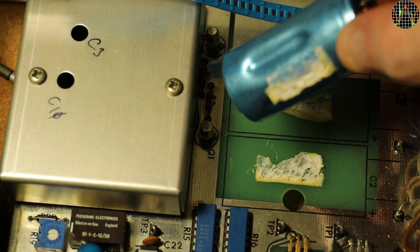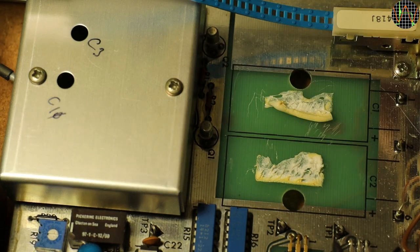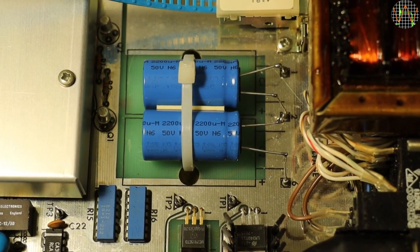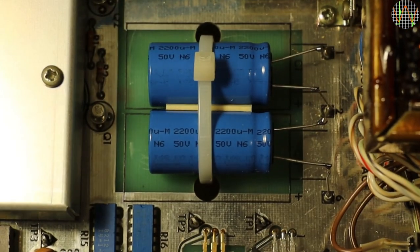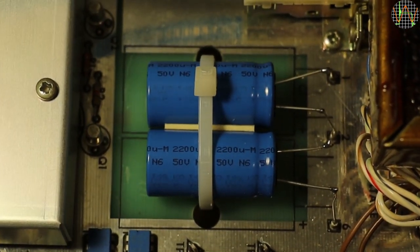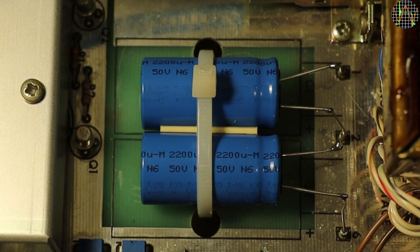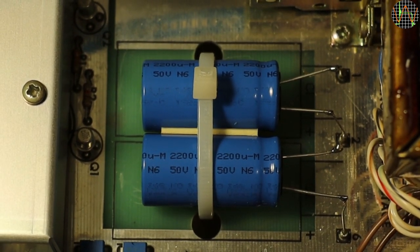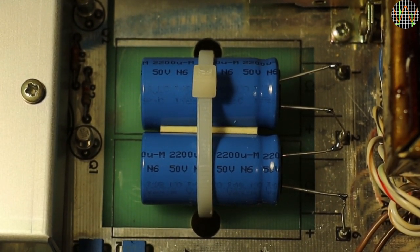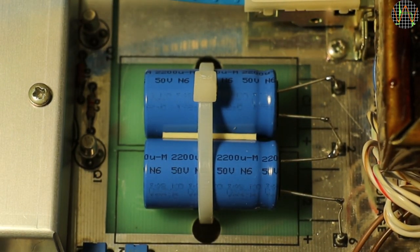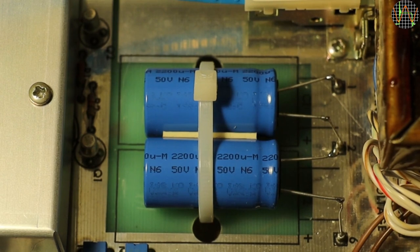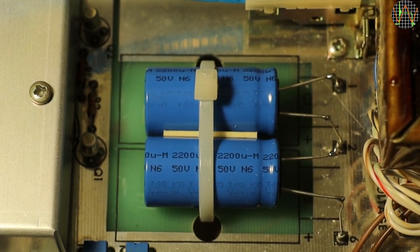And here goes cap number 2. Now for cleaning off the residue before the new caps go in. The new caps are quite a bit smaller than the old ones, but the ones I picked have an excellent lifetime of 6000 hours at extended temperature range. I leave the Vishay part number in the description if anyone is interested. I did apply a double-sided tape underneath the caps like the originals, and since these caps are smaller, I added some double-sided tape in between them as well.